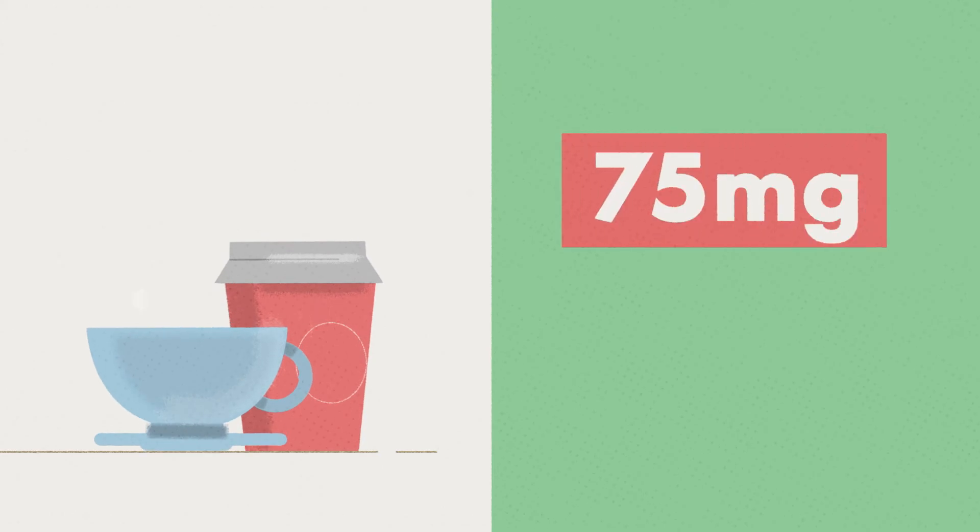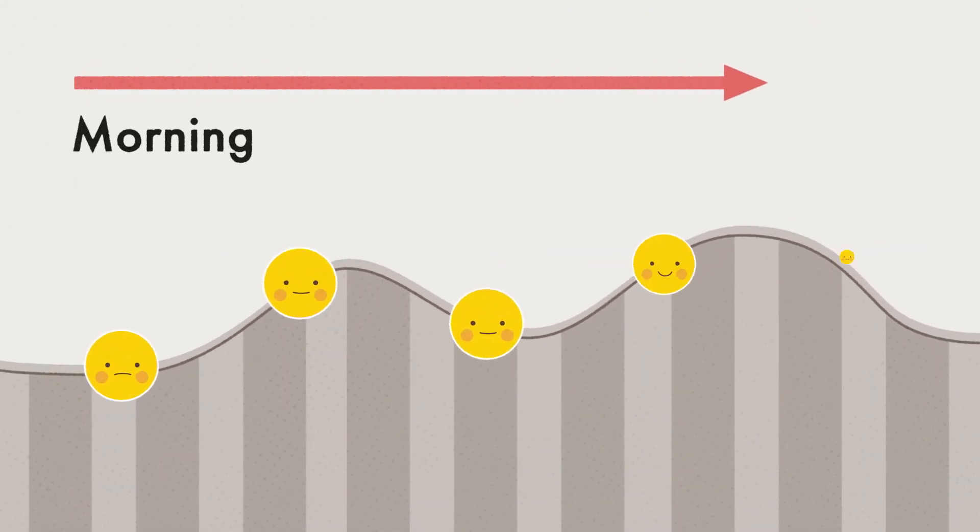A scientific review has suggested that 75 milligrams of caffeine, the equivalent to one cup of coffee, every four hours can result in a pattern of sustained improvement of mood over the day.